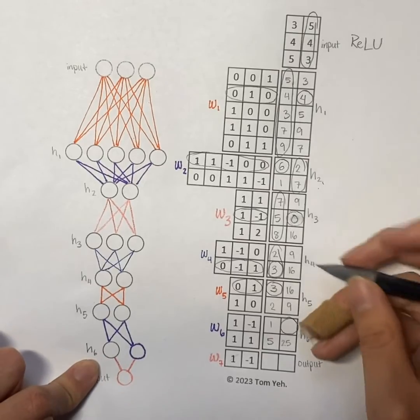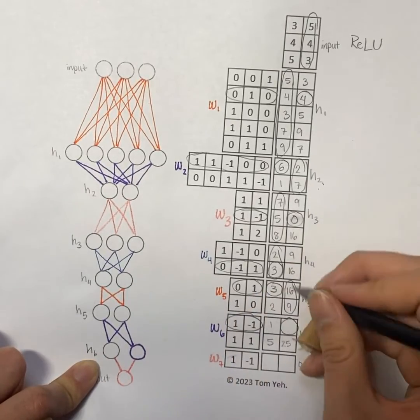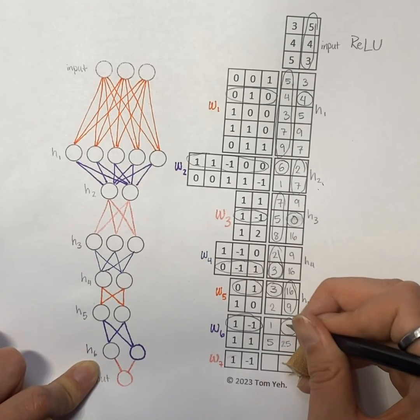And then for hidden layer 6, it's this column and this row, so that is 16 minus 9 is 7.